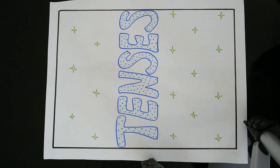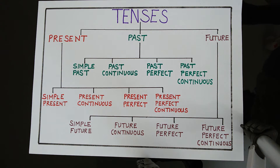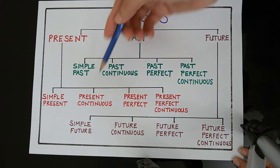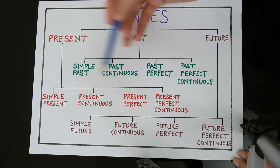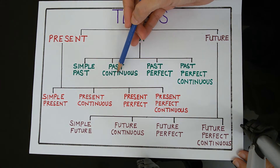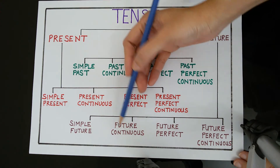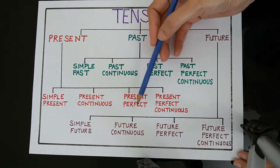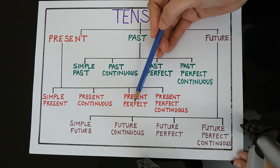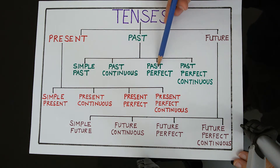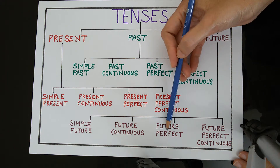Welcome to our fourth session of learning tenses. In my last video we learned about continuous tenses, that is present continuous, past continuous and future continuous. Today we will learn about perfect tenses, that is present perfect, past perfect and future perfect.